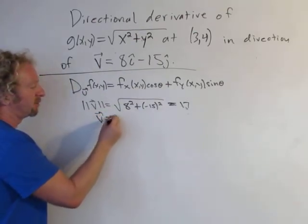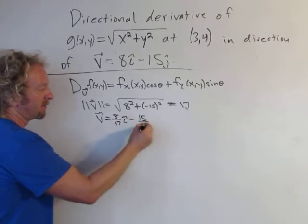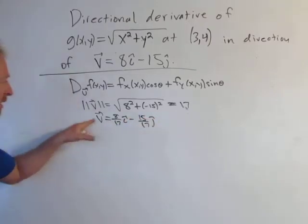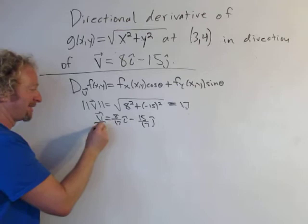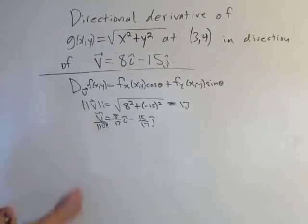So u will be equal to 8 over 17 i hat minus 15 over 17 j hat, v over the magnitude of v. So that vector is a unit vector in the direction of v. So now we're going to find, let's call this u.